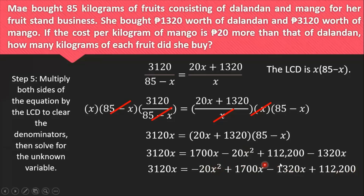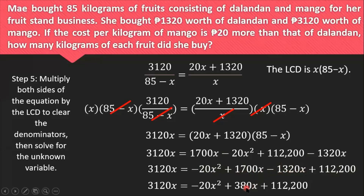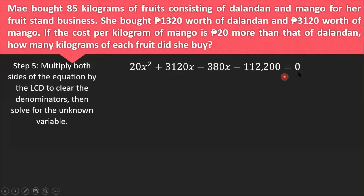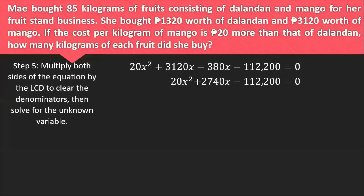Transferring all expressions from the right-hand side to the left changes their signs. We get: 20x² + 2,740x minus 112,200 = 0. Since 20, 2,740, and 112,200 are all divisible by 20, we divide the whole equation by 20, giving us: x² + 137x minus 5,610 = 0.